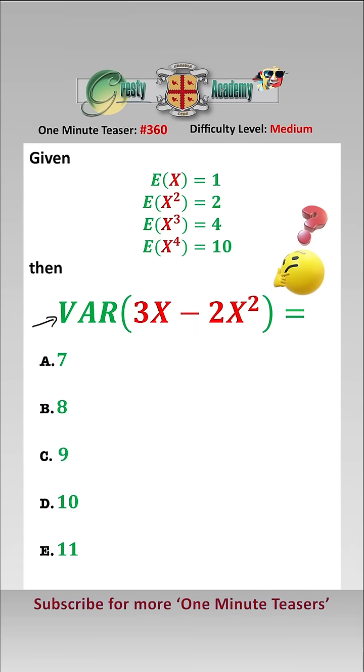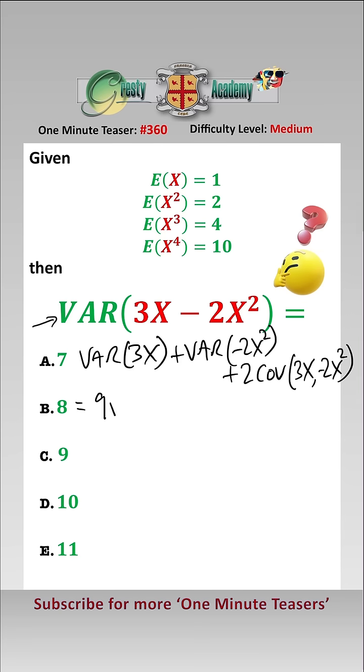So we can rewrite this as var(3X) plus var(-2X²) plus 2 times the covariance of 3X and -2X². And we can rewrite that as 9 var(X) add 4 var(X²) minus 12